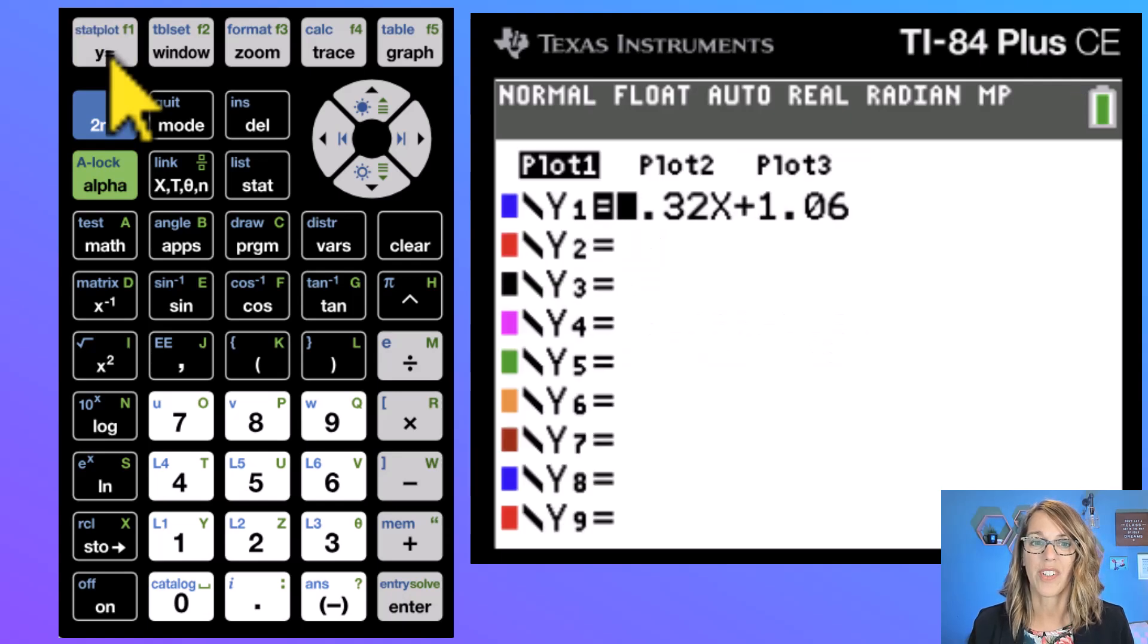Hit your y equals button here towards the top and you'll notice that it's got y1 as your regression equation. This is also a great way to check the form of that regression equation. You'll also notice here in the screen that we've got plot one highlighted.